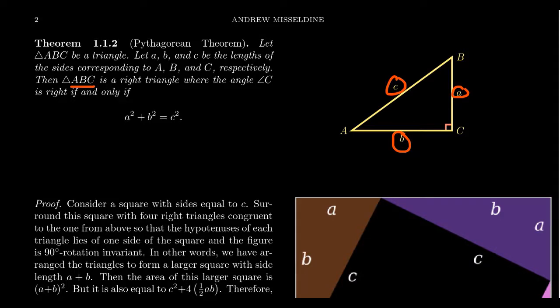That's the condition for a right triangle. But it also turns out that if the three sides of a triangle satisfy this Pythagorean equation — the sum of squares of two sides equals the square of the third side — then that triangle necessarily has to be a right triangle.